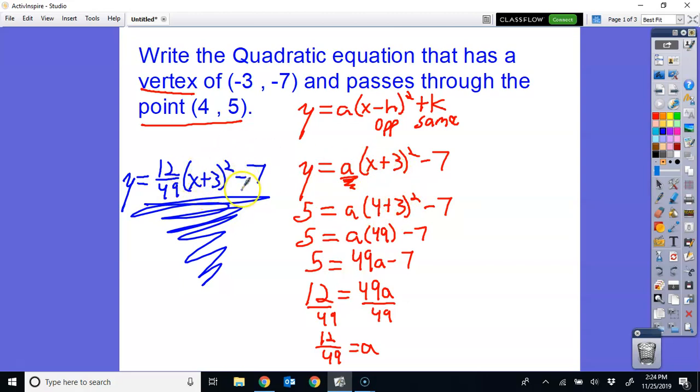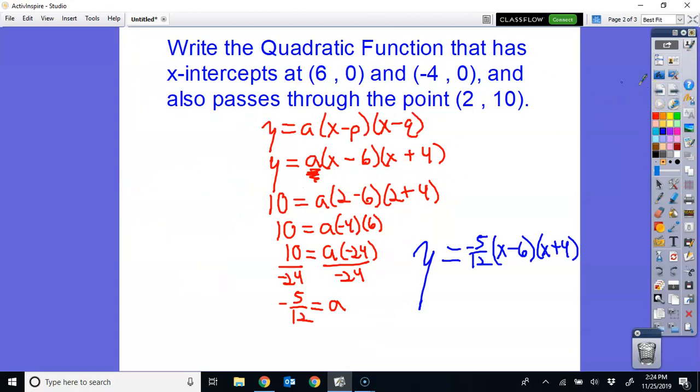x plus 3 times x plus 3. Distributing the 12 over 49. And then subtracting the 7. So the key thing, though, is if you have vertex given to you, you use vertex form. If you have the intercepts given to you, you use intercept form.